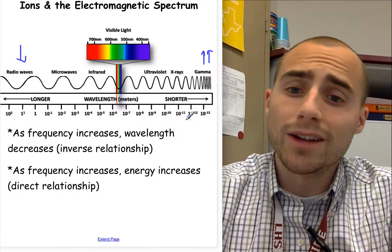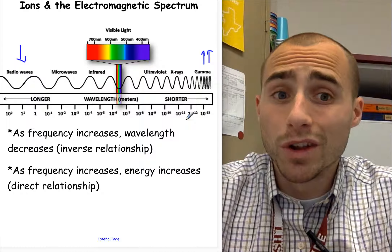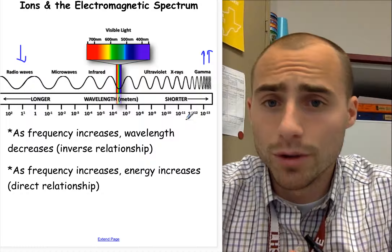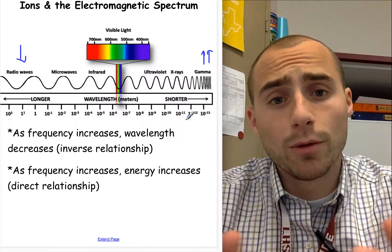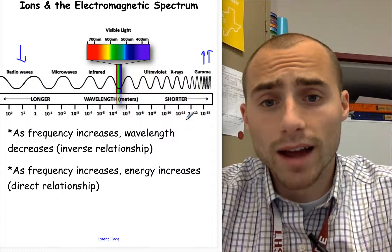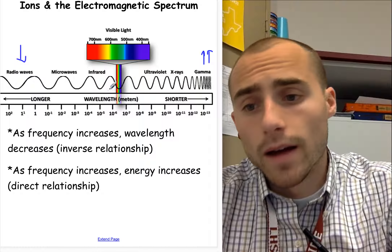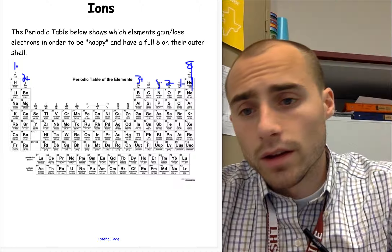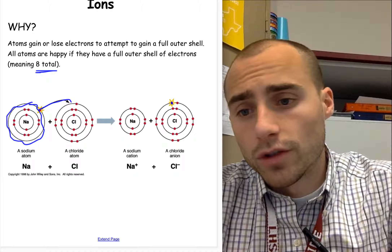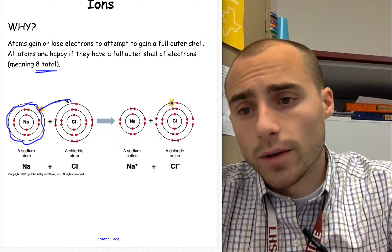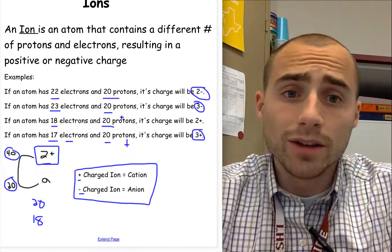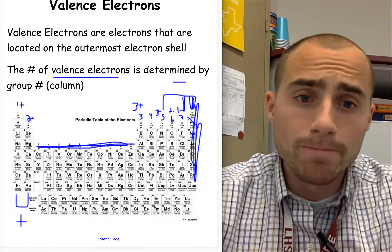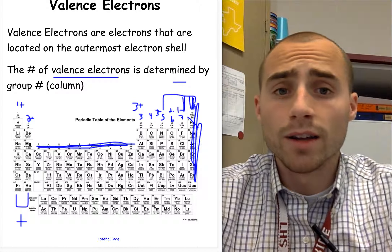We'll talk more about the electromagnetic spectrum — that was a really brief intro, but I just wanted to include that so you knew it was paired with ions. Ions have those charges we went through; we all want to have eight valence electrons, and that'll make everybody happy. Good luck and farewell.